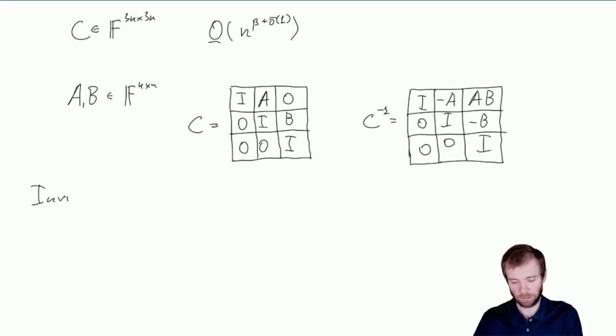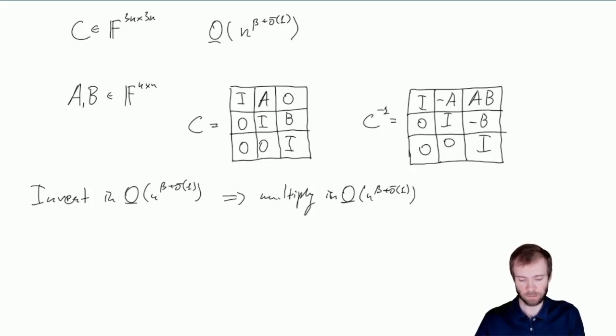So our ability to invert in time big O n to the power β plus little o implies our ability to multiply matrices in the same time. And any improvement of the exponent here would immediately imply the improvement of exponent here.